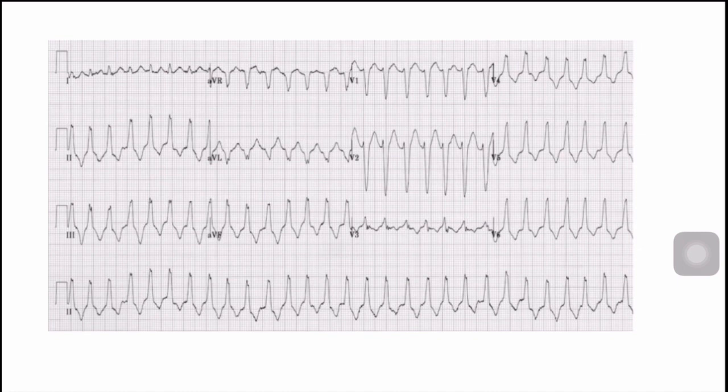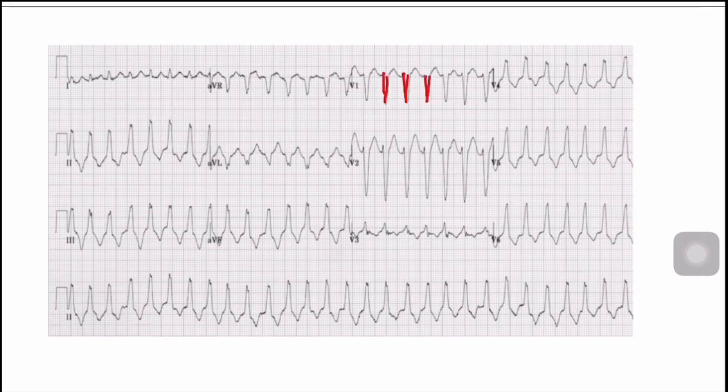This ECG shows ventricular tachycardia — a wide complex tachycardia that is regular and without P waves, so it is ventricular tachycardia until proven otherwise. The morphology is LBBB: in V1, the QRS complexes are downward, indicating left bundle branch morphology. Any VT with left bundle branch morphology in a young patient presenting with syncope — always suspect ARVD.